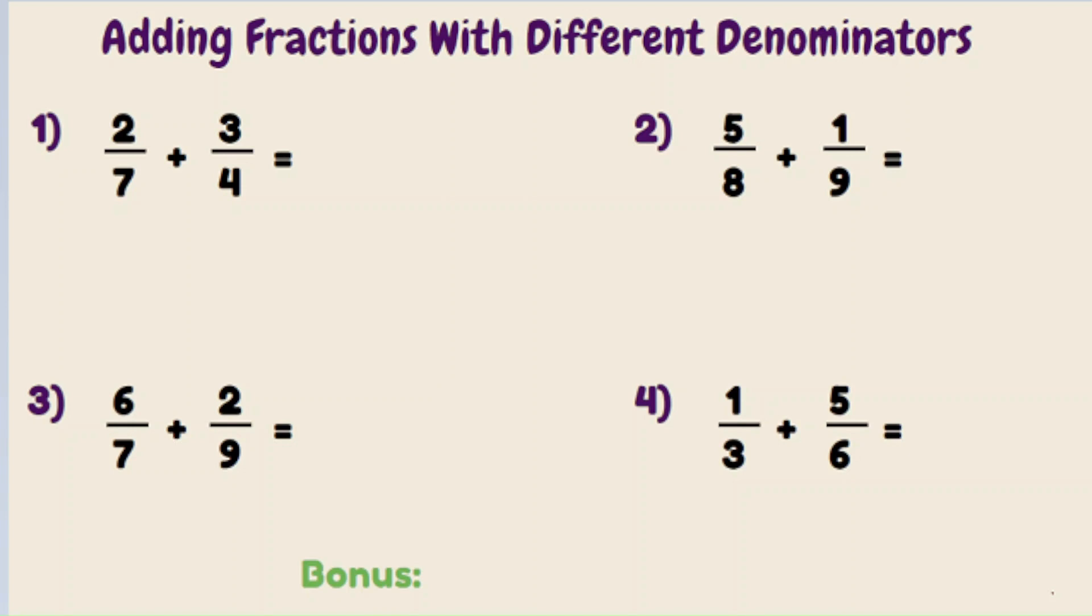Let's look at the first example. What is two sevenths plus three fourths? Well, our denominators are different, so we have to get them into an equivalent fraction. And we're going to do that by using something called the lowest common multiple. And what that means is we're going to find the multiples of seven and the multiples of four that are the same or they match.